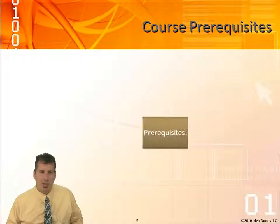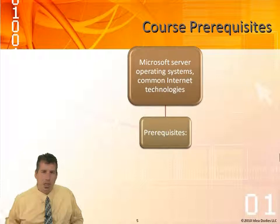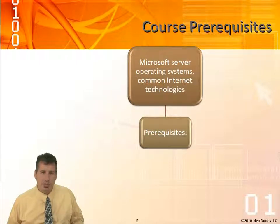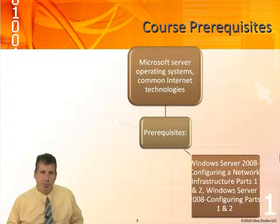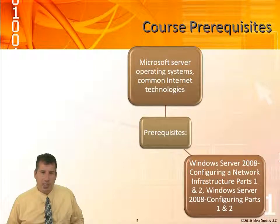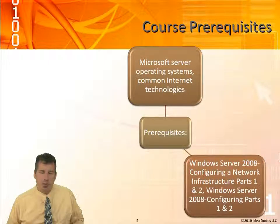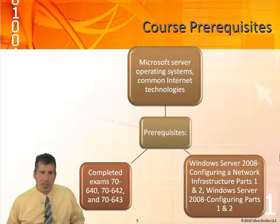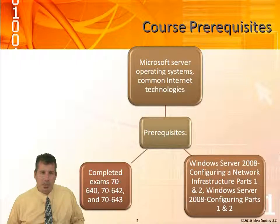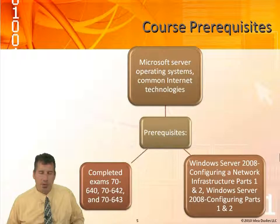Looking at the course prerequisites: you should have common knowledge of internet technologies such as DNS and DHCP, Windows Server 2008 Configuring Network Infrastructure Parts 1 and 2, and Windows Server 2008 Configuring Parts 1 and 2. The exams this course also looks at are the 70-640, 42, and 43 exams, which you should have taken.